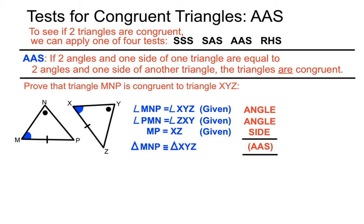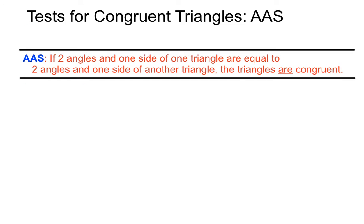So set your work out carefully. Look from one triangle to the other and piece together the information that you need to list. Then you can conclude that the two triangles are congruent using the AAS test, which states that if two angles and one side of one triangle are equal to two angles and one side of another triangle, the triangles are congruent. That's the AAS test.